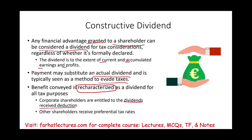If it's a shareholder, they will be taxed most likely at a preferential tax rate of 0, 15, or 20 percent. Nevertheless, many shareholders would rather have the payment classified as an expense to the corporation rather than income to themselves.